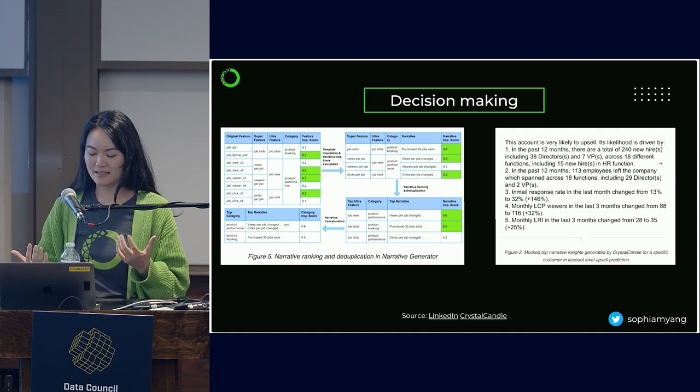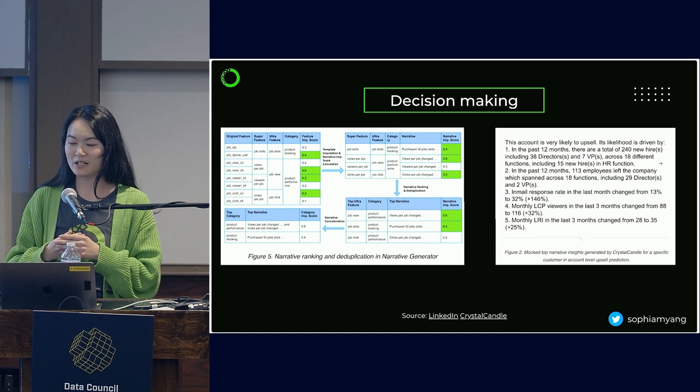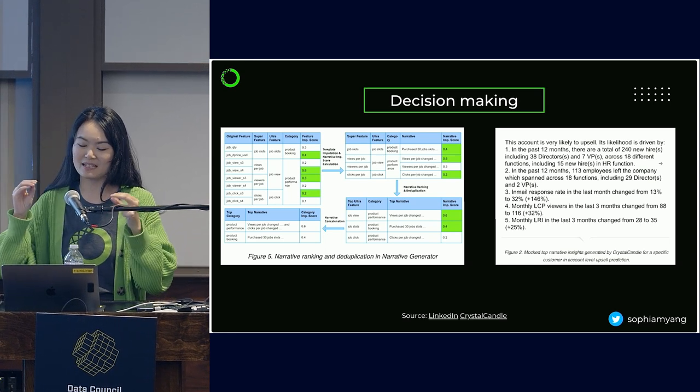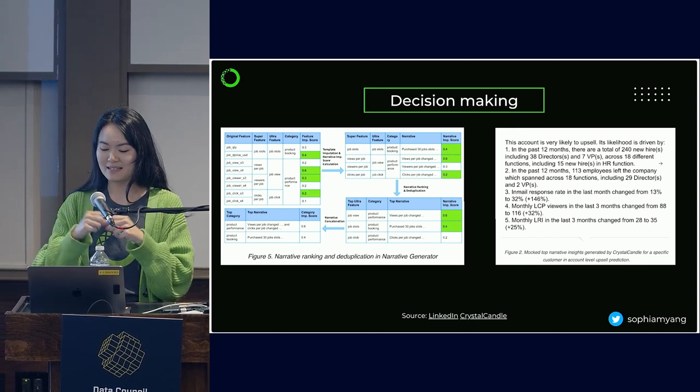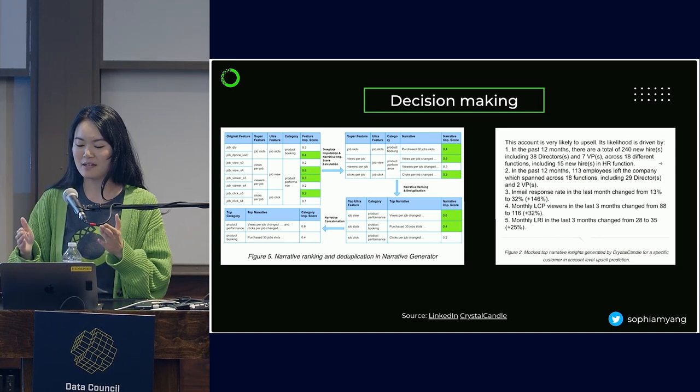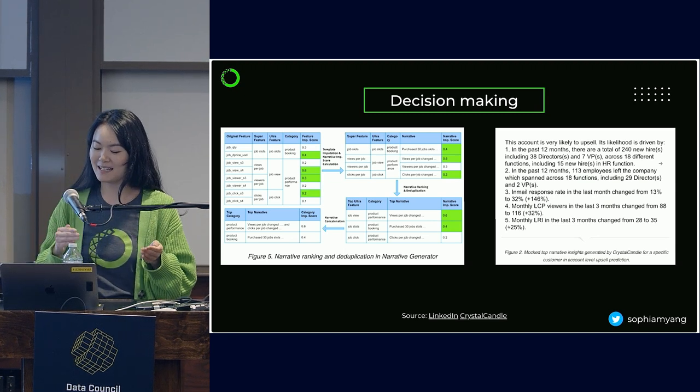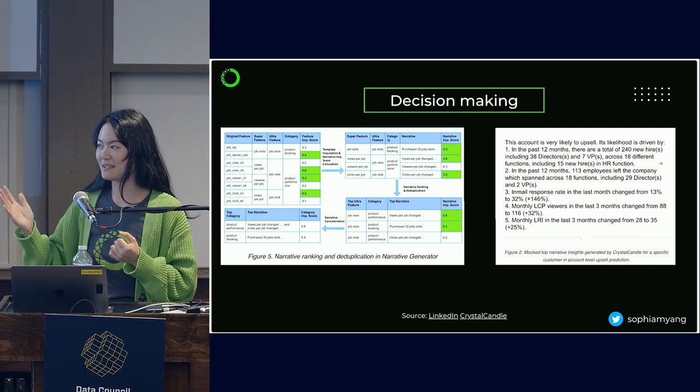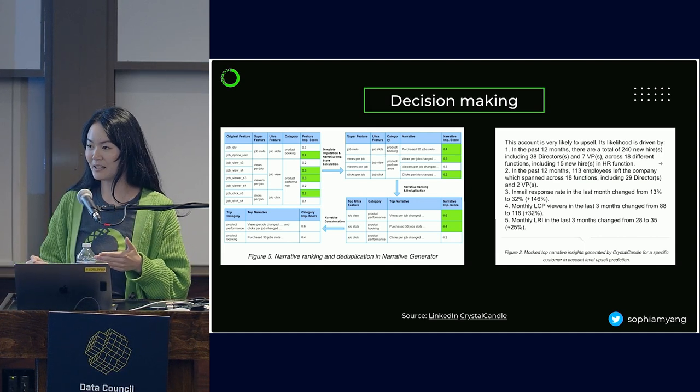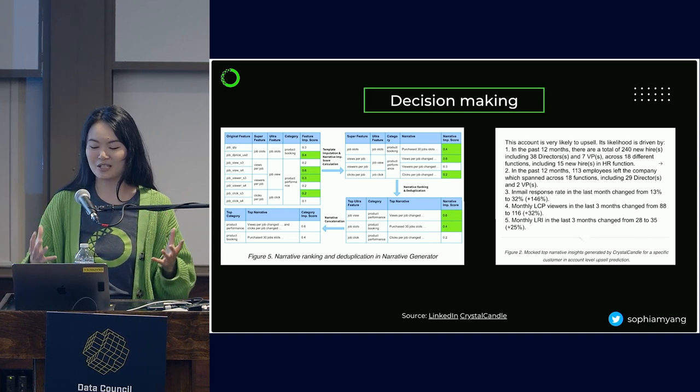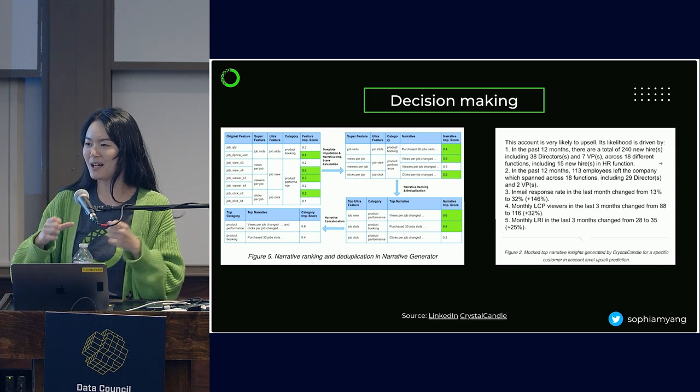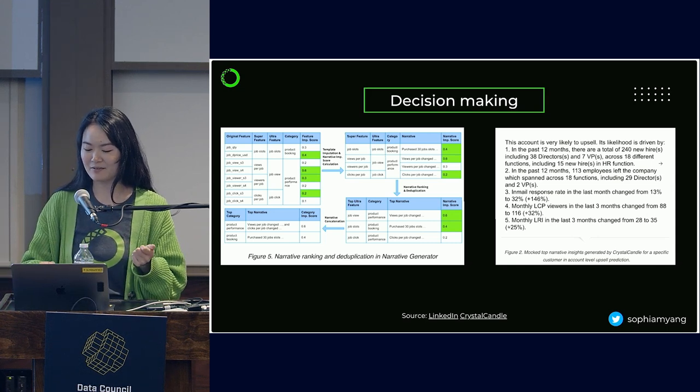So LinkedIn created this product called Crystal Candle where essentially it extracted important features that's important in predicting the output and then rephrase it in a narrative that normal people can understand. So even people who don't understand data science, they understand how this model is predicted, what factors are important. To the right here, you can see one of the narrative. This account is very likely to upsell. Its likelihood is driven by those five factors. So with this information, the sales team is able to go talk to the customers and tell them, okay, because of those reasons, I think I have a perfect product for you. And then they can facilitate a much better effective conversation with the customers.